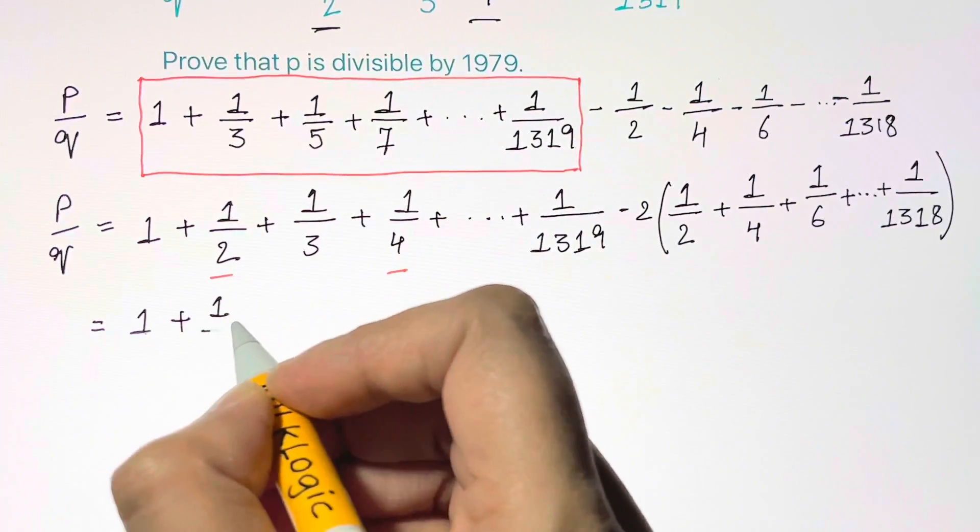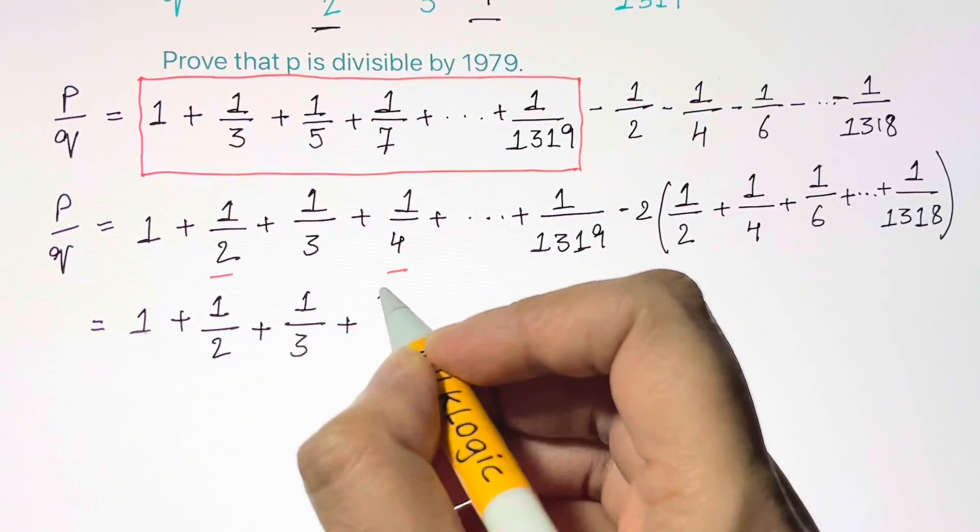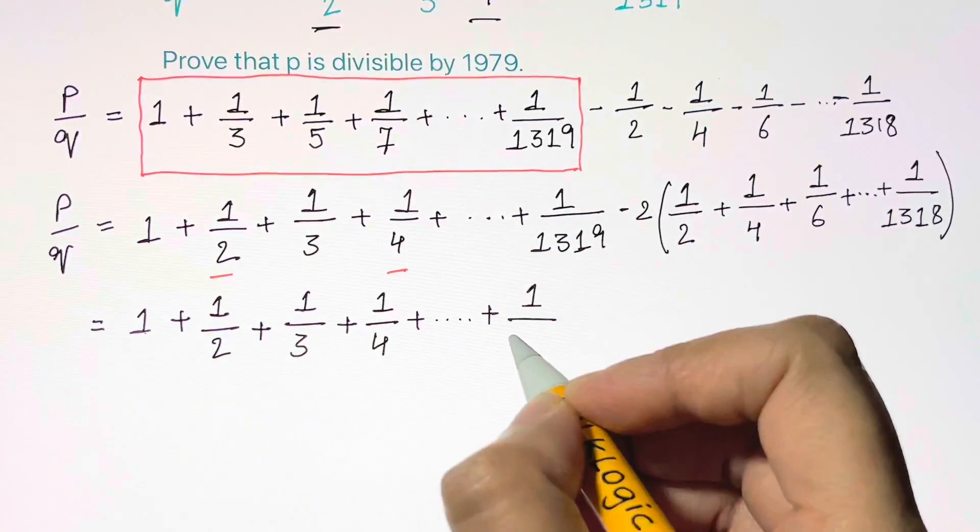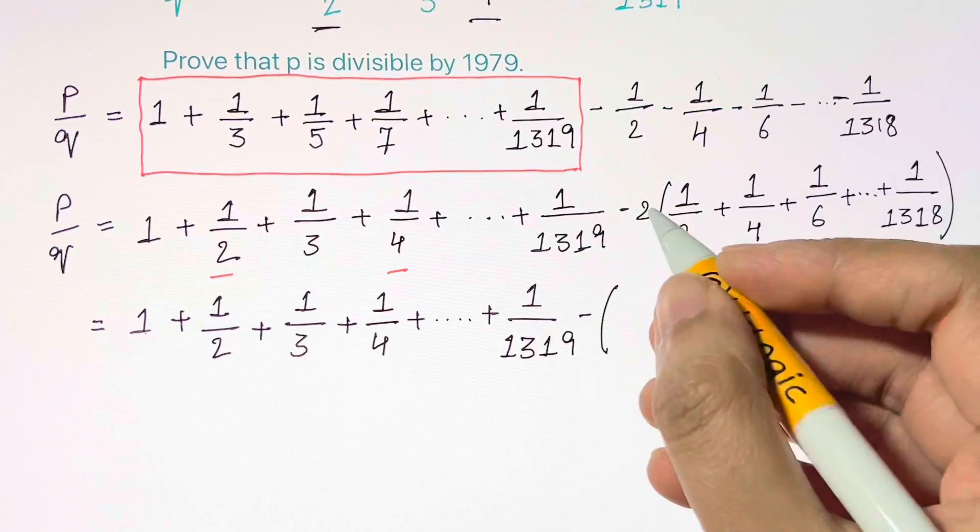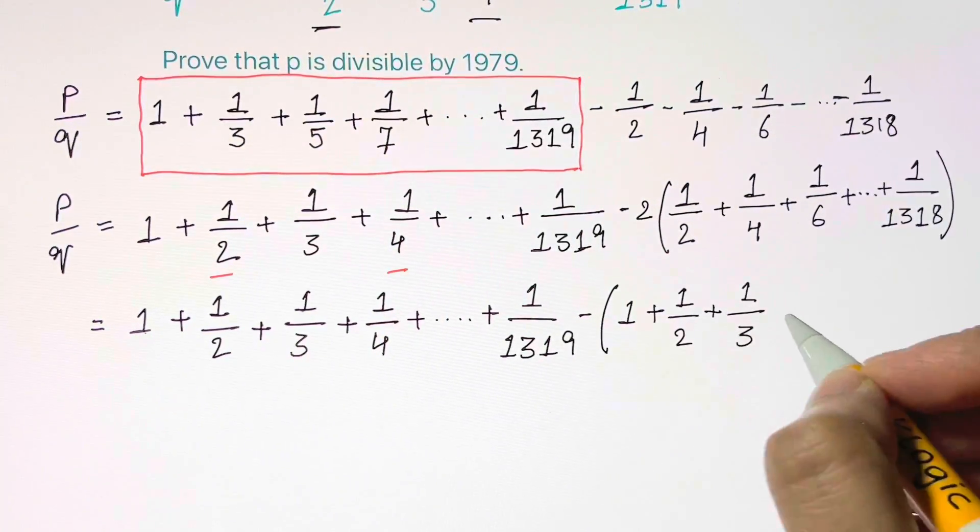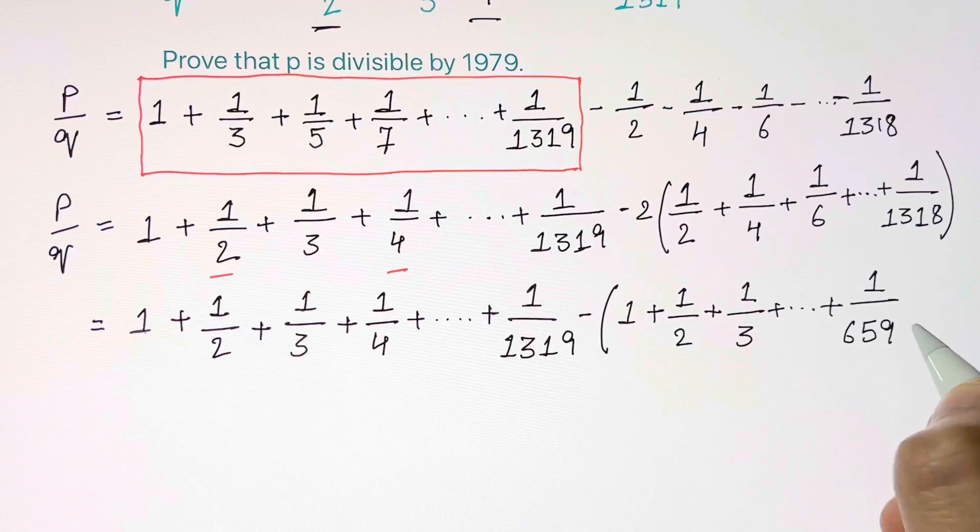It becomes 1 plus 1 over 2 plus 1 over 3 up to 1 over 1319 minus 1 plus 1 over 2 plus 1 over 3 all the way to 1 over 659.